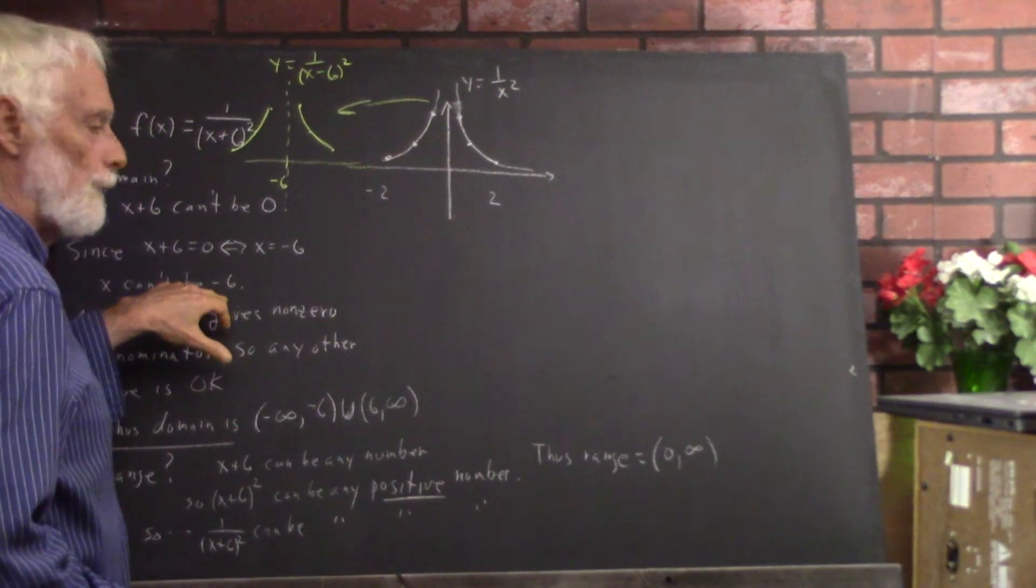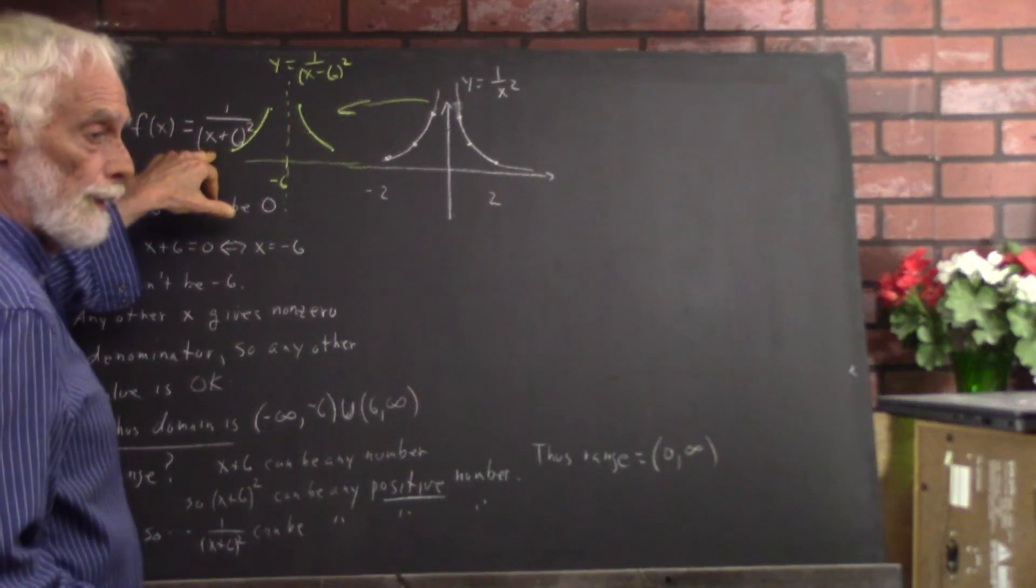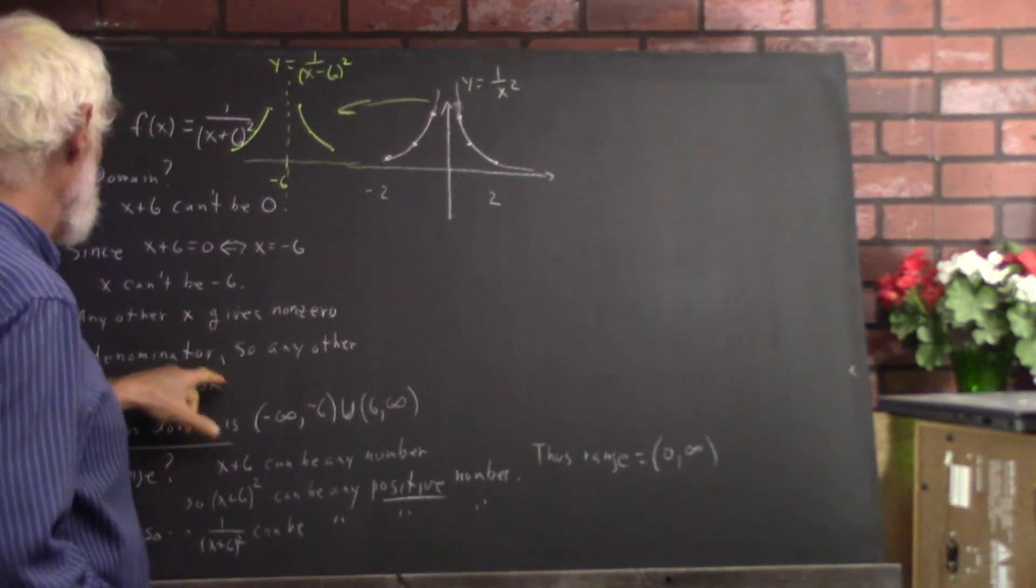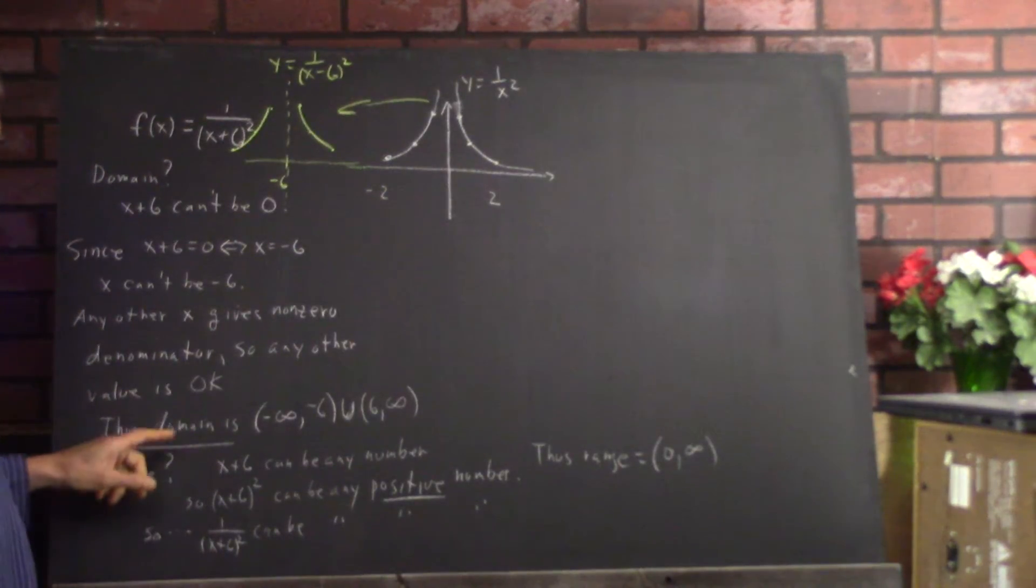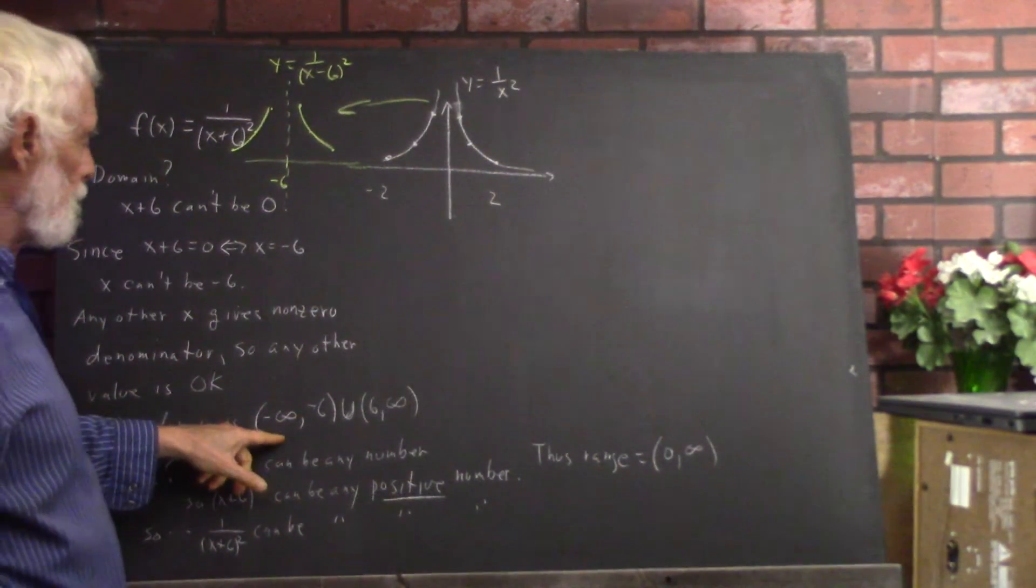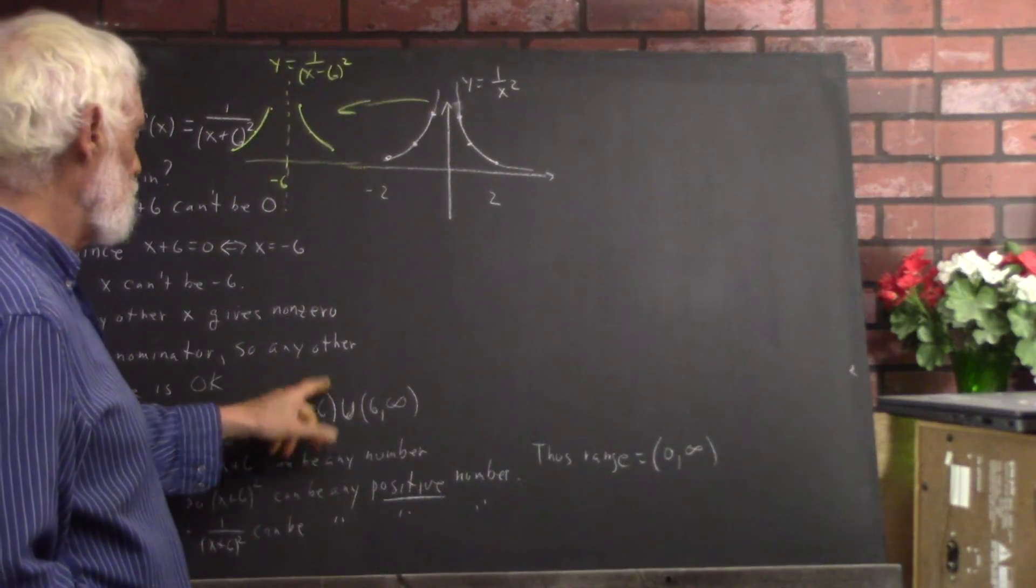It can be any other number. I could really write this as an equivalent. x plus 6 is 0 if and only if x is negative 6. So the only number you have to restrict here is negative 6. Okay, any other x gives a non-zero denominator.